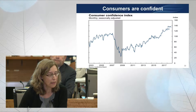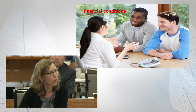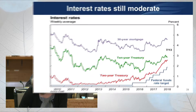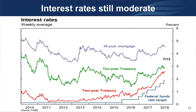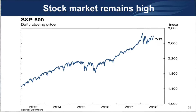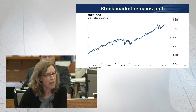Financial conditions: interest rates have increased notably since the beginning of the year — longer-term rates especially — but they're still relatively low by historical standards. The stock market has seen some volatility recently but has retained almost all of its gains since the beginning of 2017. All of these things are supporting growth faster than trend.